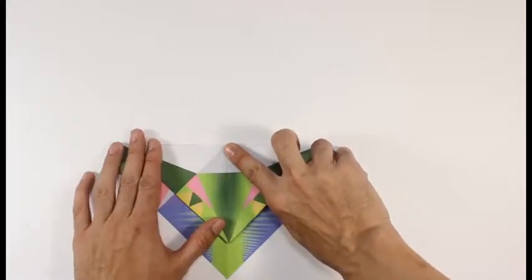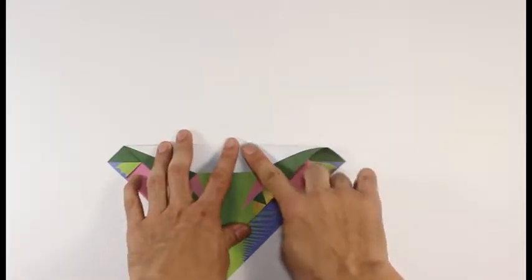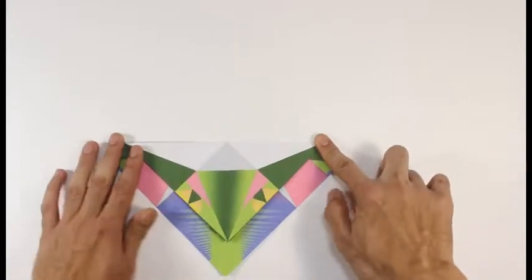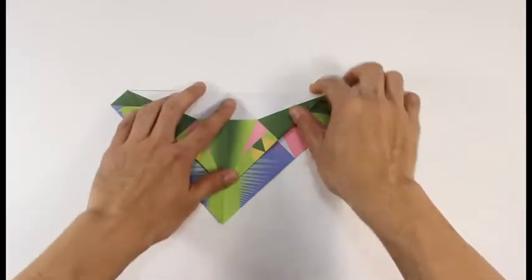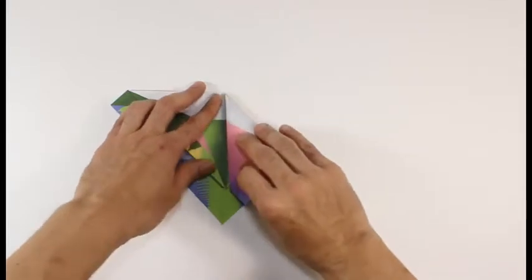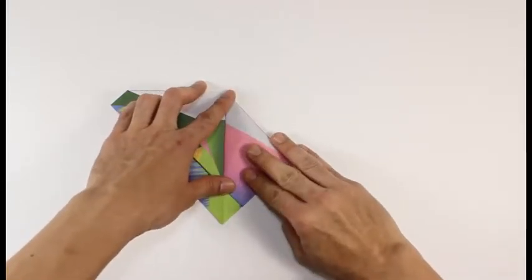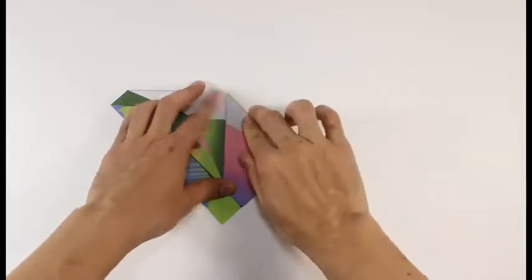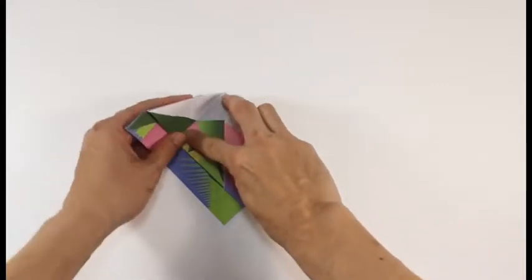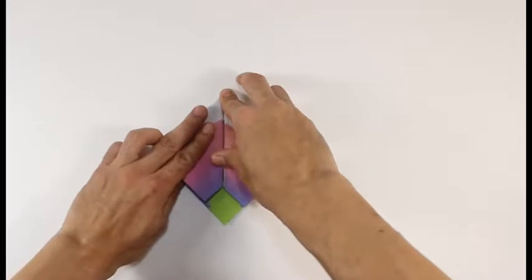Now fold that top point down along the pinch that we originally made at the center. Fold the top edge down along the center line and repeat on the other side.